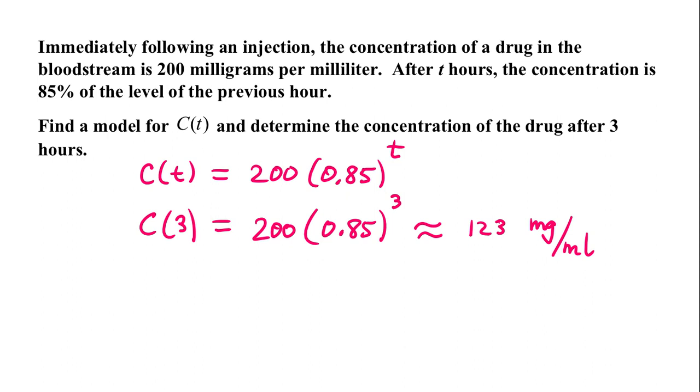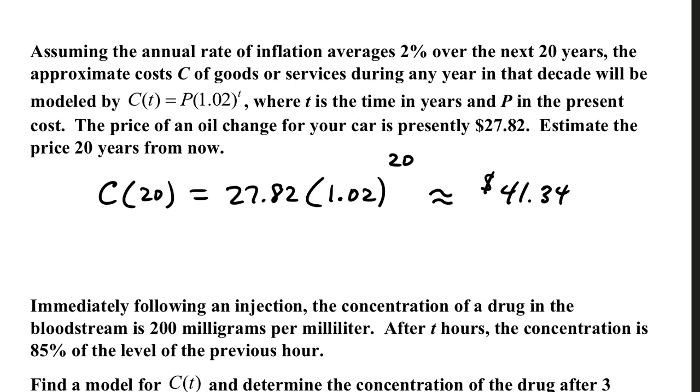In your calculator, you'll want to enter 200 parentheses, 0.85, close, hit your power button, give it a three, and to the nearest whole number, I think it rounds to about 123 milligrams per milliliter.